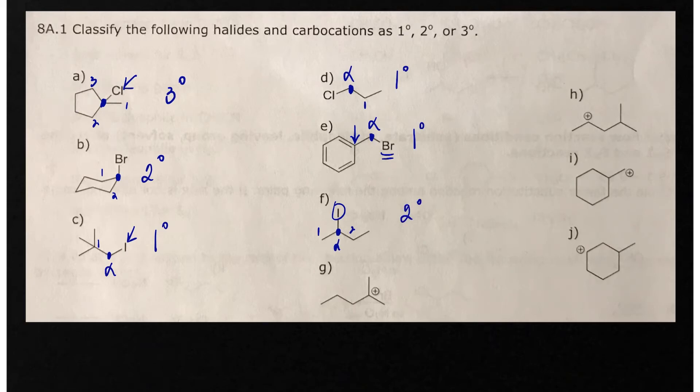Now we'll deal with carbocations. Identify the carbocation carbon—the one with the positive charge—and count the carbons attached to it. This is a tertiary carbocation.